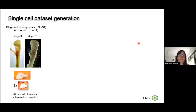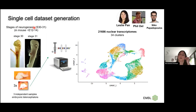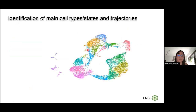We generated a single-cell dataset by taking three independent samples of dissected telencephalons at stages of development equivalent to mouse embryonic day 12 to 14 — neurogenesis stages. We generated 21,000 nuclear transcriptomes.